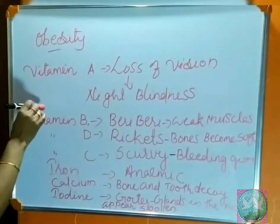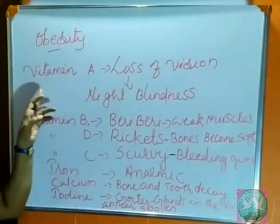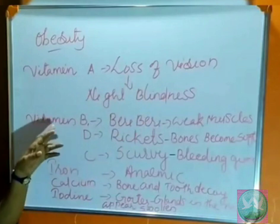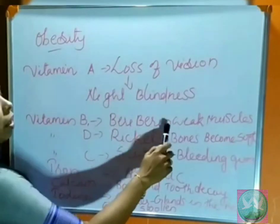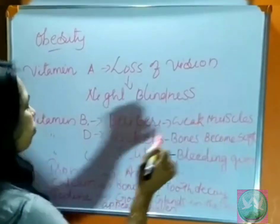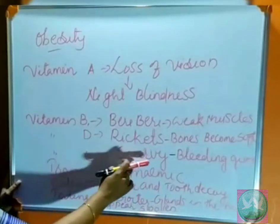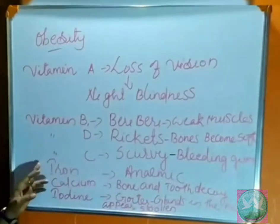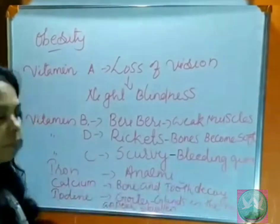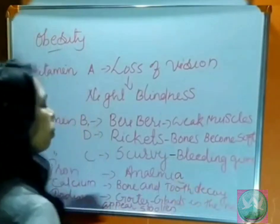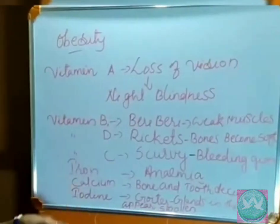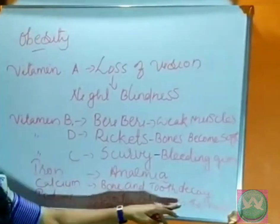Once again, we can go through the deficiency diseases. Vitamin A deficiency — loss of vision, also called night blindness. Vitamin B1 — it causes beriberi, which makes our muscles weak. Vitamin D — it causes rickets; the bones become soft. Vitamin C — it causes scurvy, which causes bleeding of gums. Iron deficiency causes anemia — the person will look pale. Calcium causes bone and tooth decay. Iodine deficiency causes goiter — glands in the neck are swollen.